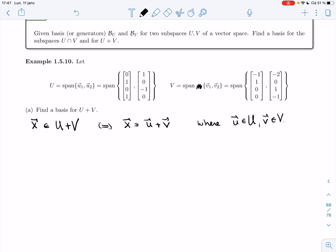But anything in U can be written as a linear combination of these two vectors. So that would mean A1 U1 plus A2 U2. And same thing for V but in terms of V1 and V2.